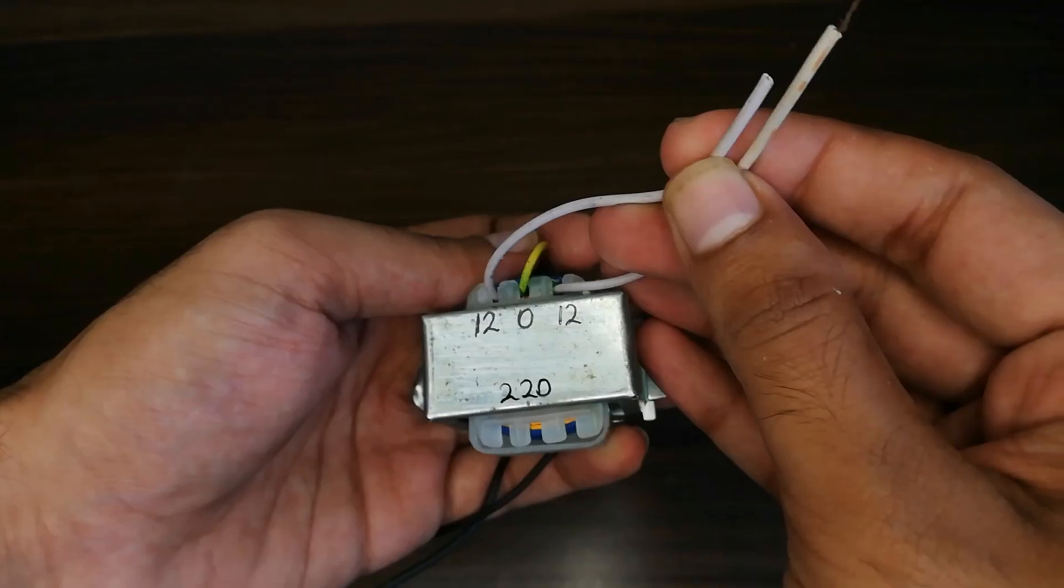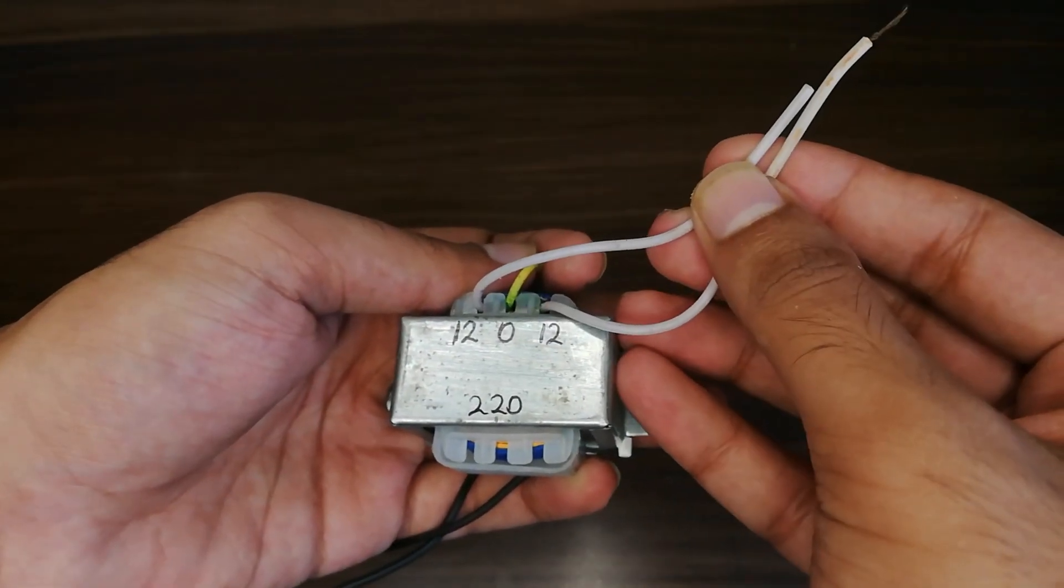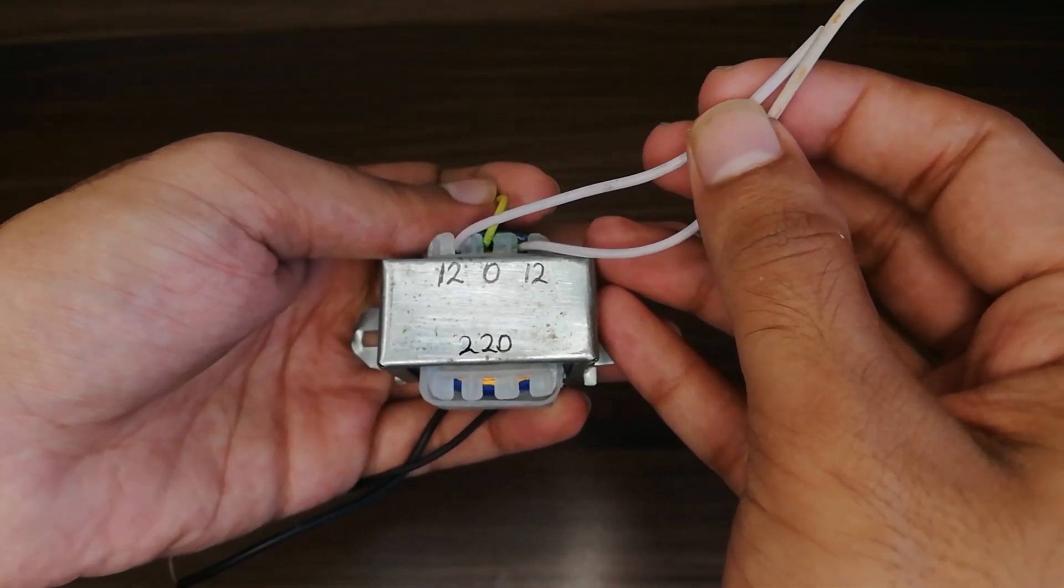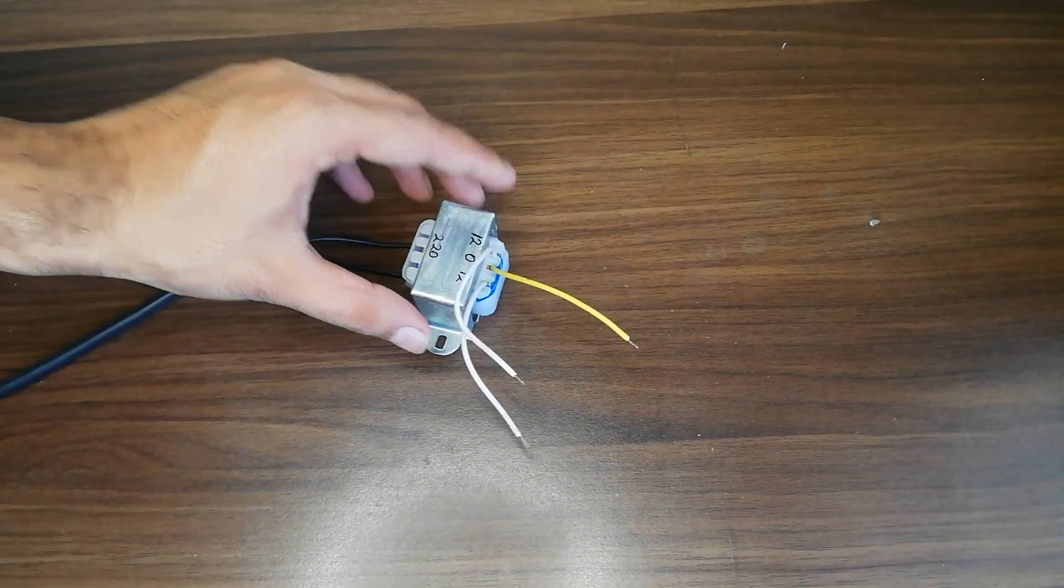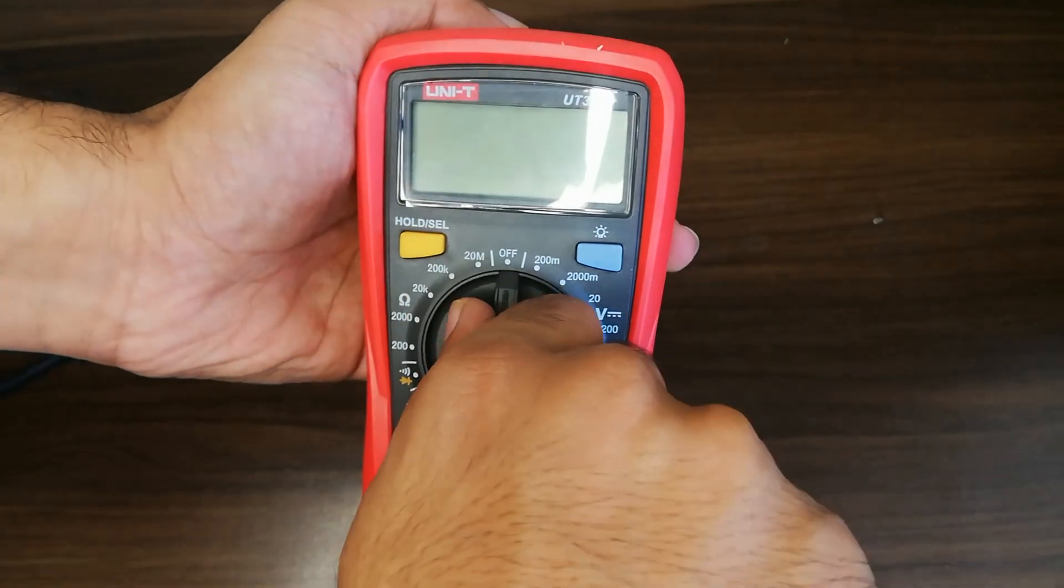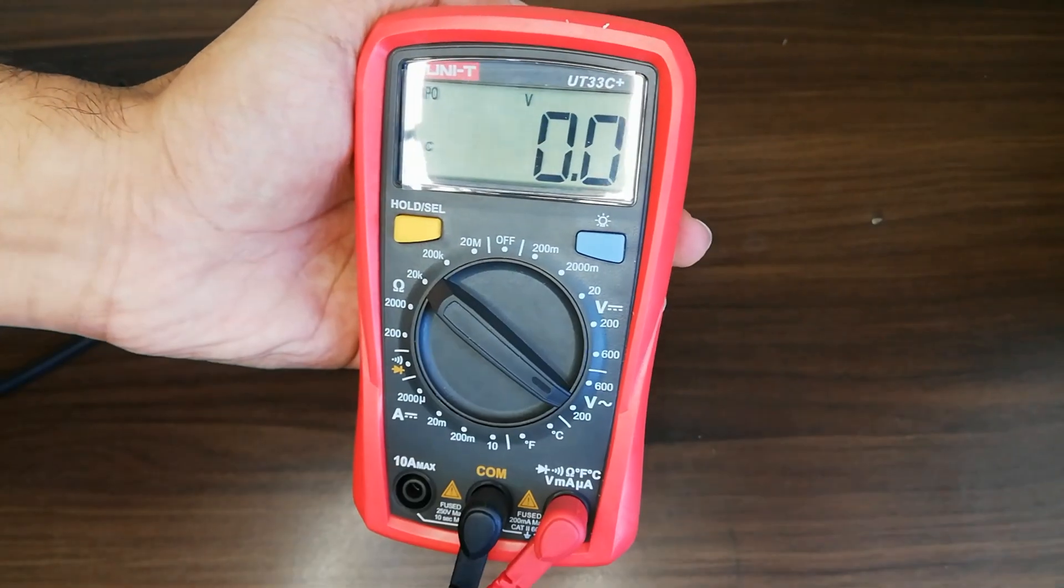To demonstrate it, I connected my transformer to the mains 220 volts power source, and to measure the output I am going to use a multimeter in the AC voltage mode. If you are not an expert, then please avoid the steps being demonstrated in the video.